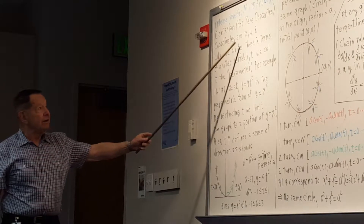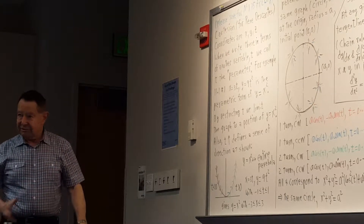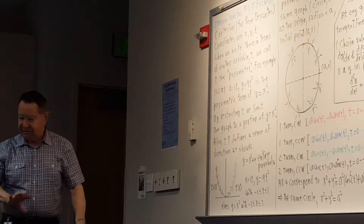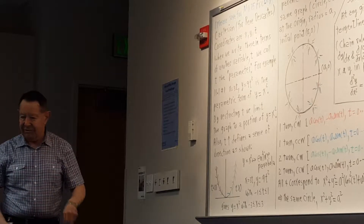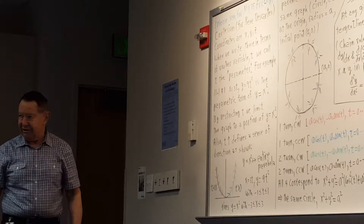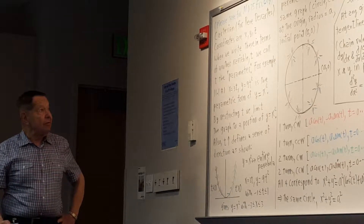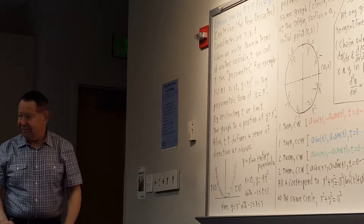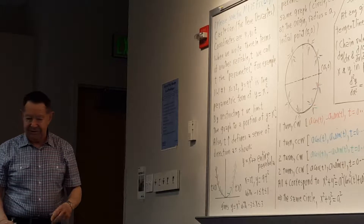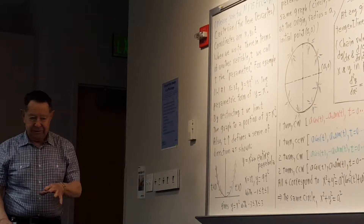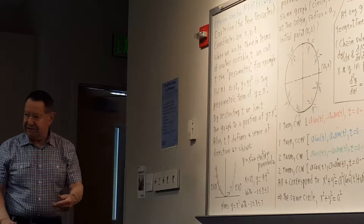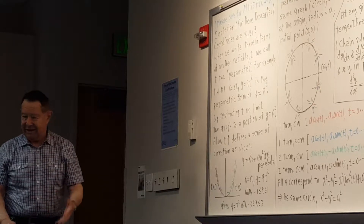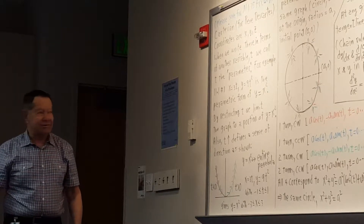When we write Cartesian coordinates in terms of some other variable — and it could be more than one new variable — then the new variable or variables are called parameters. You're selecting values of those parameters and then, by some formula, computing the corresponding values of X and Y (or X, Y, and Z) and constructing your graph.